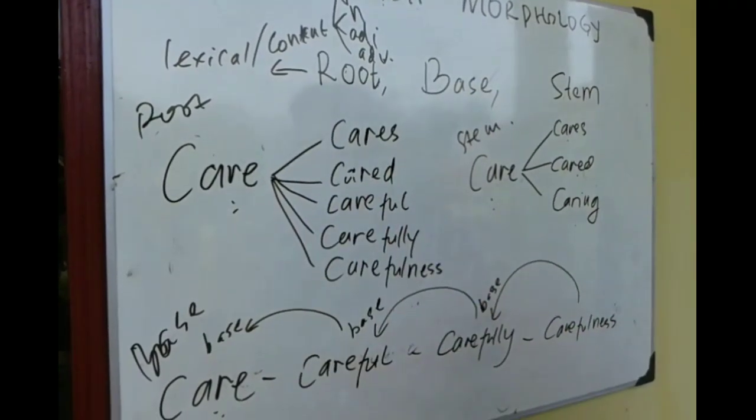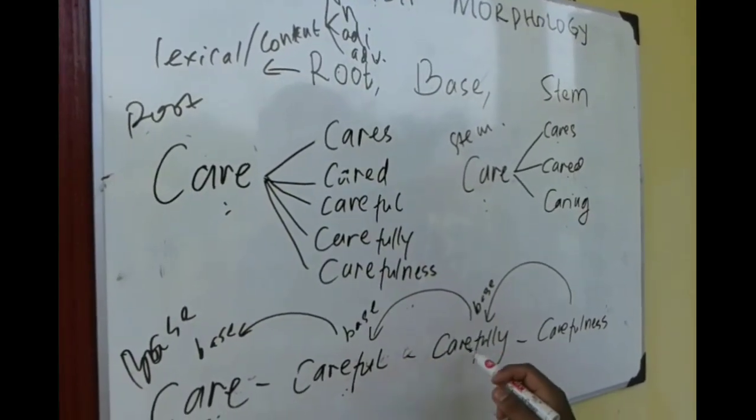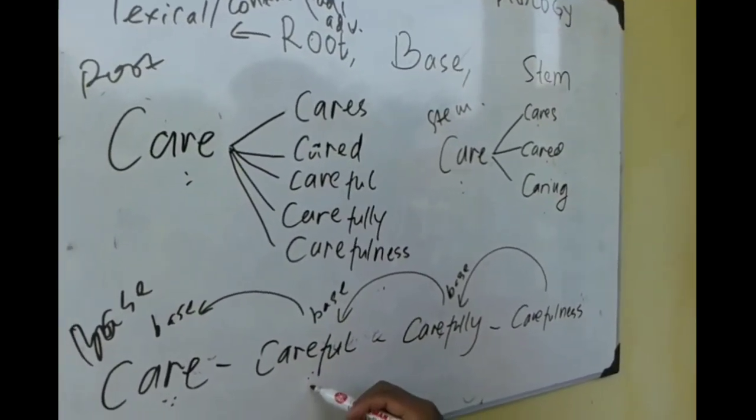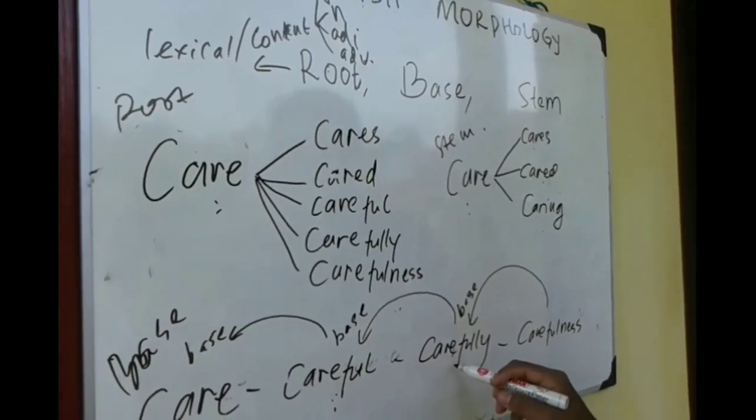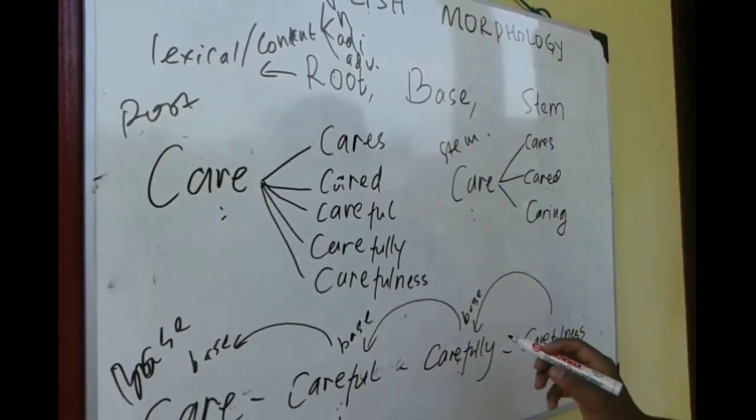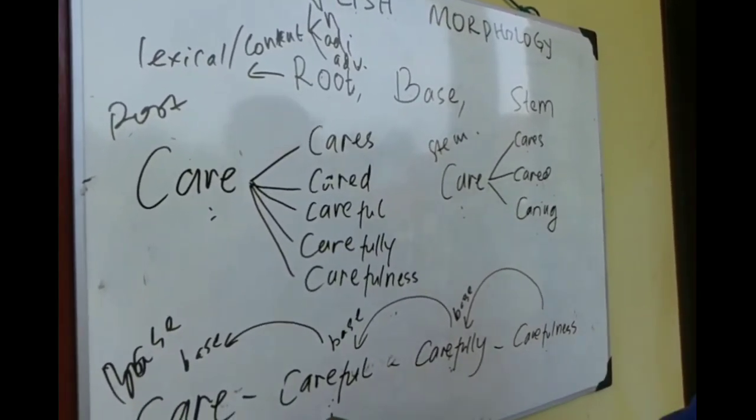But not all bases are root. For example, this is root, this is basis. This is basis for this, but this is not root anymore. This is basis carefully, this basis for carefulness, but this is not root anymore. The root here, only one: care.